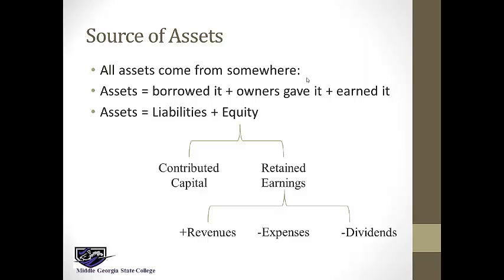Reducing that down to technical words: assets come from either liabilities — those are creditors who expect to be repaid but have given you assets for now — or equity. Equity has two parts: contributed capital, what you got from owners, and retained earnings, what you earned on your own. Both are available for owners — one came from owners and one came from profitable operations.